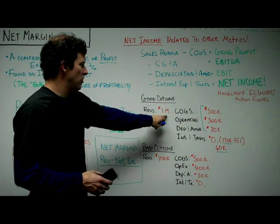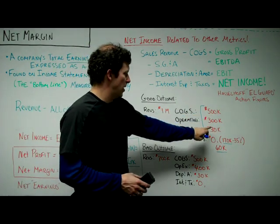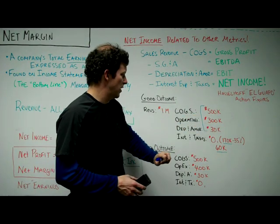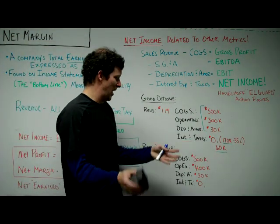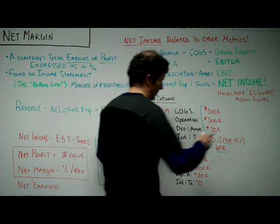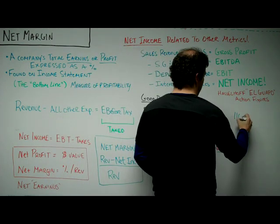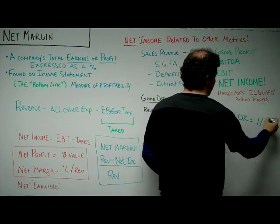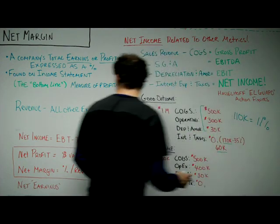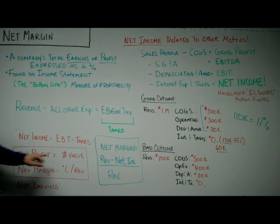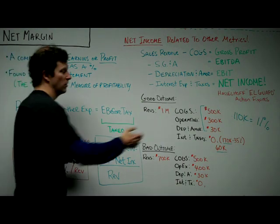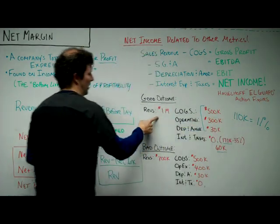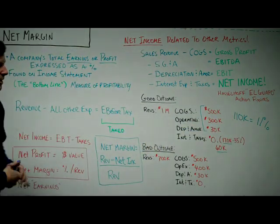If we did revenue of a million dollars, we had a cost of goods sold of $500,000, an operating expense of $300,000 — along with depreciation and taxes — and we're left with $110,000, that gives us an 11% net margin. Net profit is $110,000, but net margin is a percentage in relation to total revenue. So $110,000 is 11% of $1 million — that's net margin.